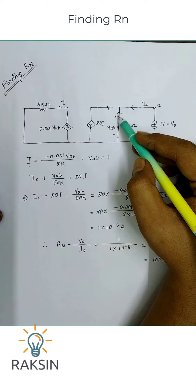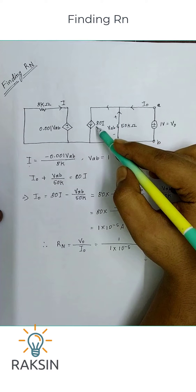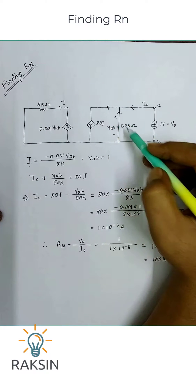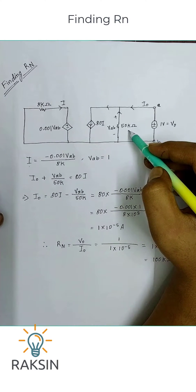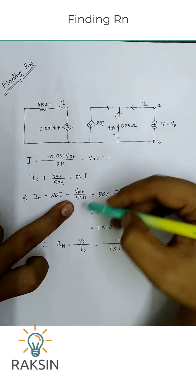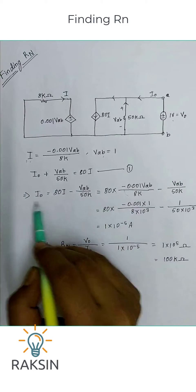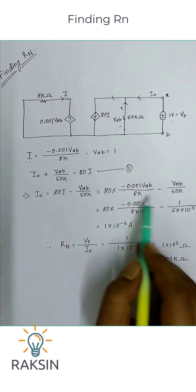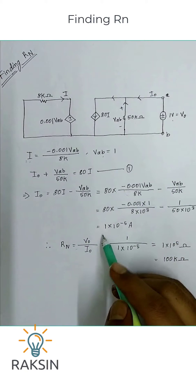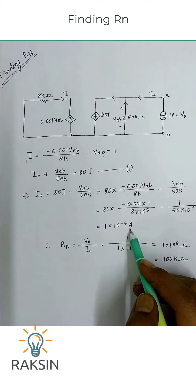Now we apply KCL to this point. I_not current is going in, this current is also going in, and 80I is going out. This current will be V_ab divided by 50k. We have rearranged the equation, and now we will put the value of I and V_ab here. We will get I_not equal to 1 times 10 to the power minus 5 ampere.